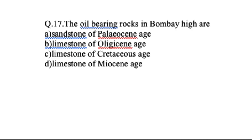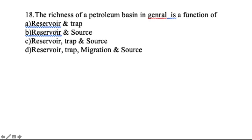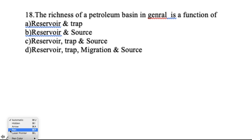The oil-bearing formation in Bombay High is made up of limestone, and the reservoir rock is of Miocene age — so the answer is limestone of Miocene age. Regarding the richness of a petroleum basin: if the source rock has abundant organic compounds that get converted to crude oil and migrate to the reservoir rock, which is then trapped by a cap rock, it will form a rich petroleum deposit. So the right answer is D — all factors combined.